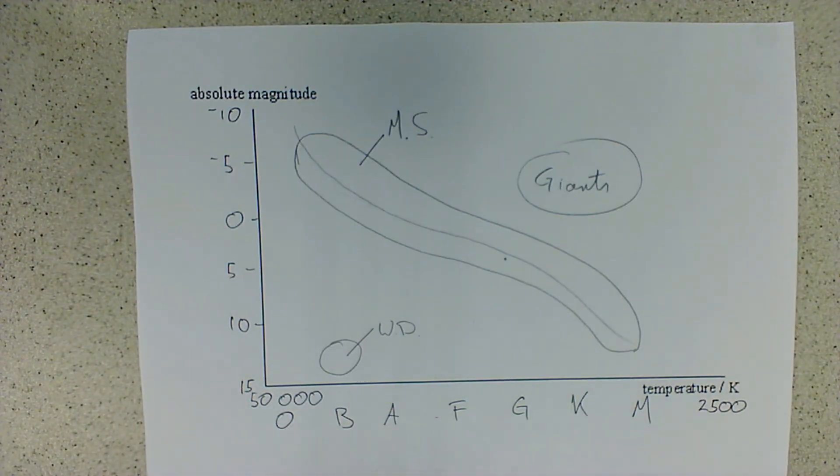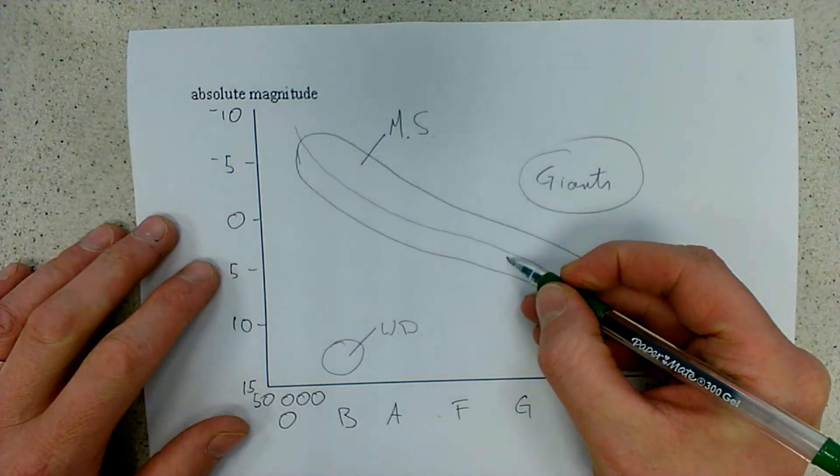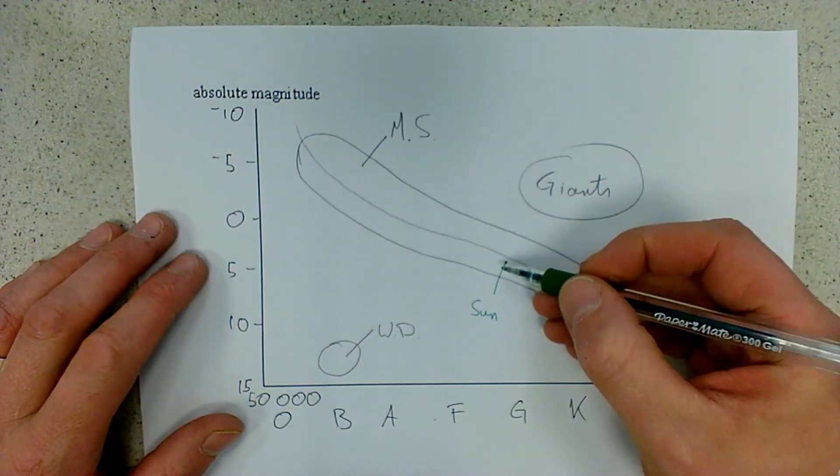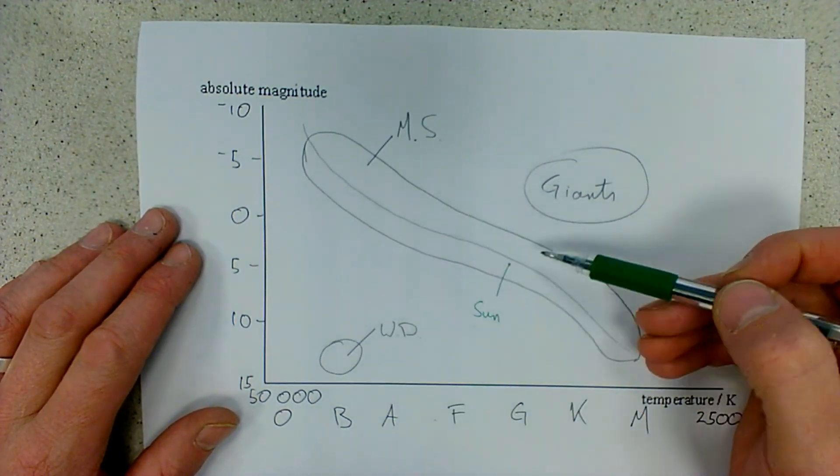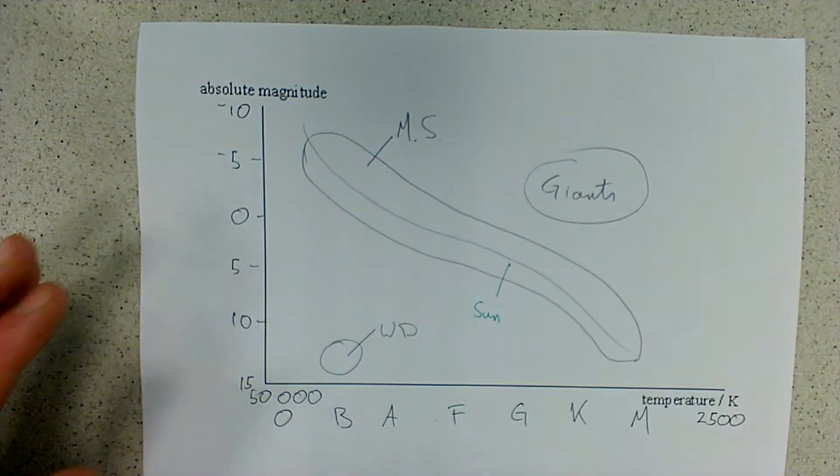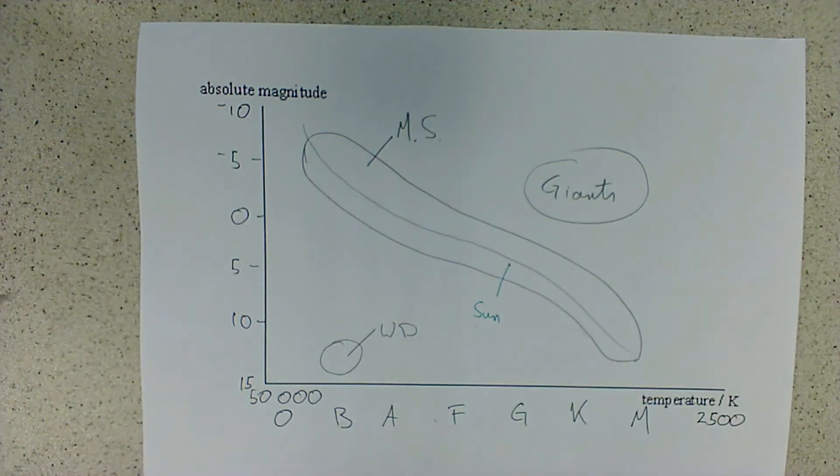Once you've drawn your HR diagram, you may be expected to mark on a few different objects. So we've already marked the Sun, which is there. It's a G-class star. It's got a magnitude of about 4.8, so that's in round about the right place.